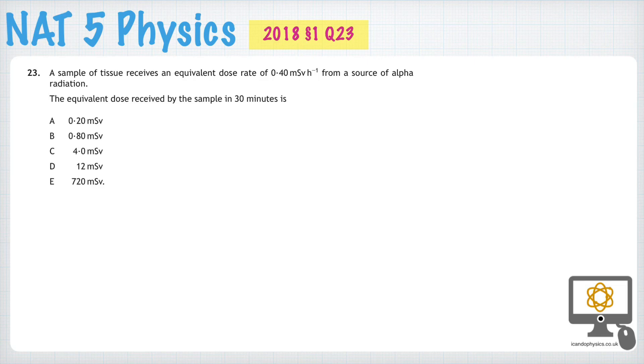Question 23 from the 2018 National Physics paper is there to assess our ability to solve problems using equivalent dose rate and equivalent dose and time.